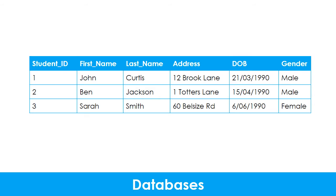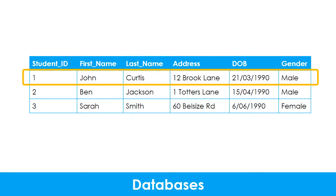Databases store data in tables. This is an example of a table that is used to store student details. Each individual piece of information in a table is known as a field. For example, last name is a field. All the information related to one object or person is known as a record. For example, this is the record for John Curtis.